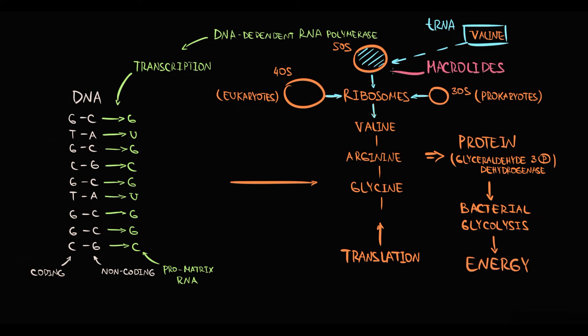So macrolides bind to 50S ribosome subunit and block it. Thereby, transfer RNA molecule cannot put the amino acid into the amino acid chain, so amino acid chain cannot be further elongated. And without amino acids, protein cannot be formed.